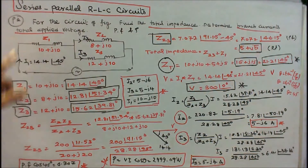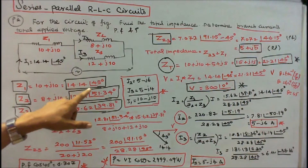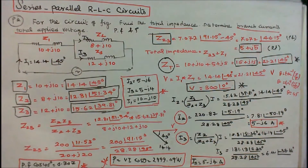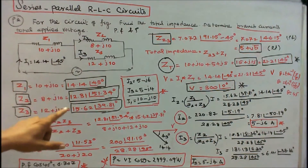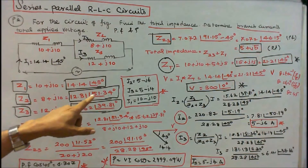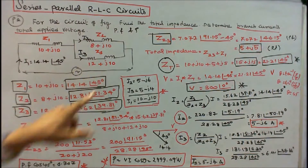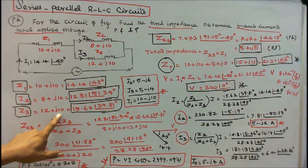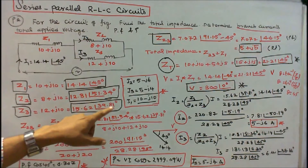Z1 = 10 + j10 in rectangular form; in polar form, 14.14∠45°. Z2 = 8 + j10 in rectangular form; in polar form, 12.81∠51.34°. Z3 = 12 + j10 in rectangular form; in polar form, 15.62∠39.81°.